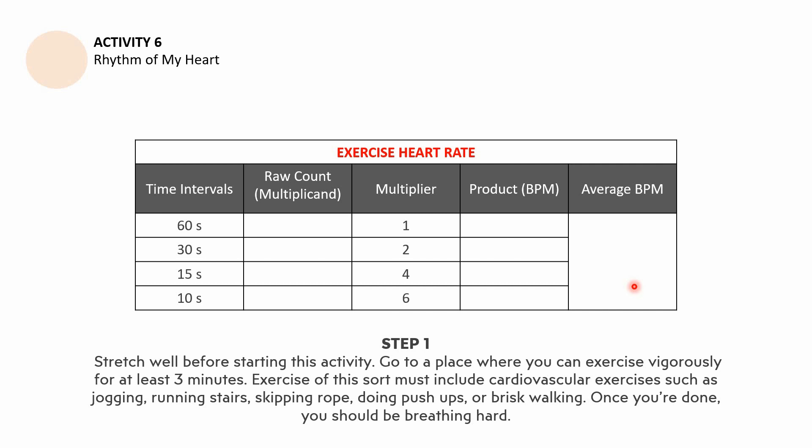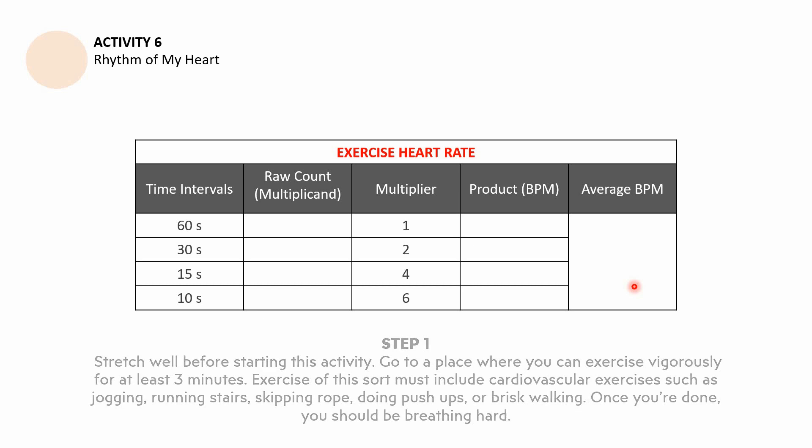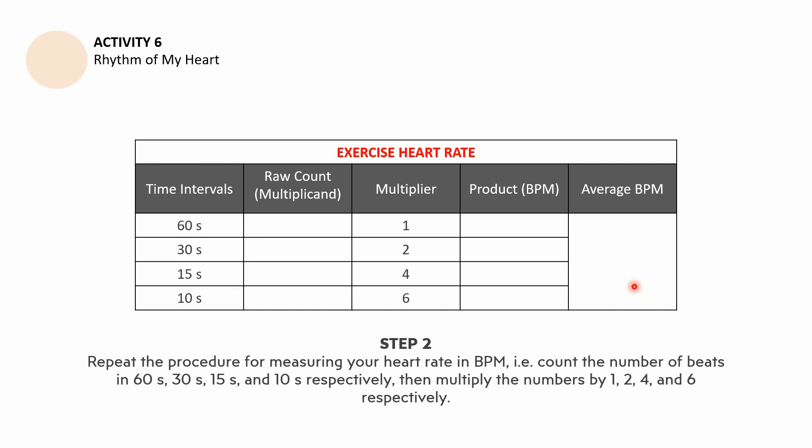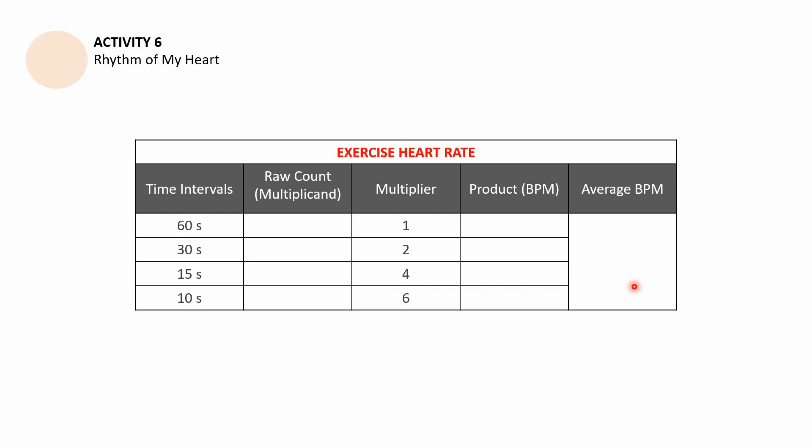After the 3 minutes, you should be breathing quite harder than when you were resting. Repeat the procedure for measuring your heart rate in BPM — count the number of beats for 60, 30, 15, and 10 seconds respectively, multiply by 1, 2, 4, and 6, and then get your average beats per minute.